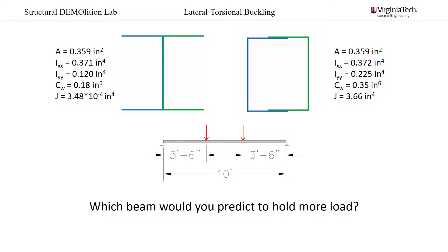Shown here are two different cross-sections. Notice how they are made from the same two shapes arranged in different configurations. Therefore, the cross-sectional areas are the same. Now if these were used for the same span length of an unbraced beam, which would hold more load?